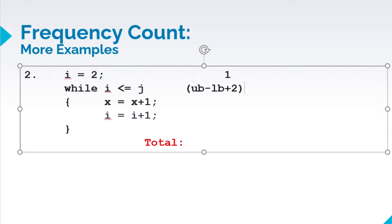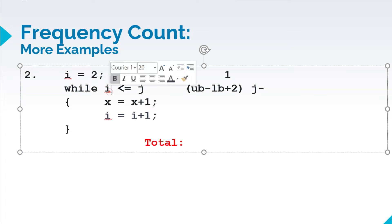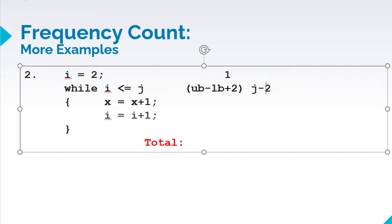So here, our upper bound is j, minus lower bound. Our lower bound here is i, and for our i, it is represented by 2. So we'll just have it 2, and then plus 2. So if we compute for that: j minus 2 plus 2, that is 0. So our final answer here is j.